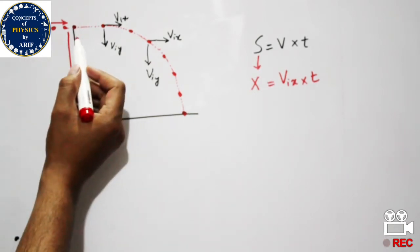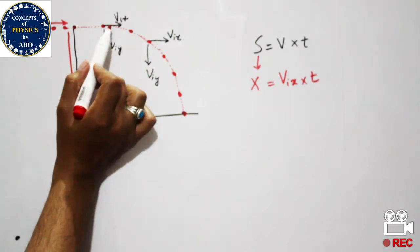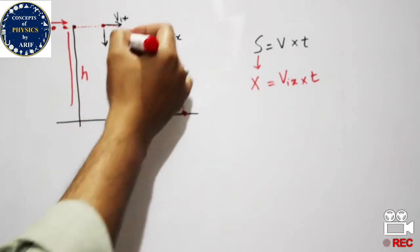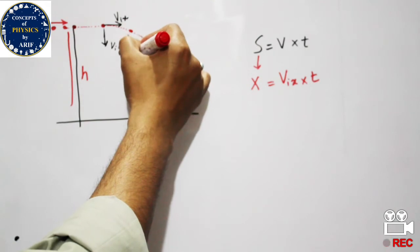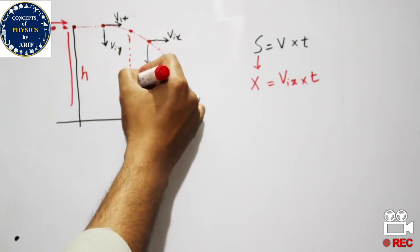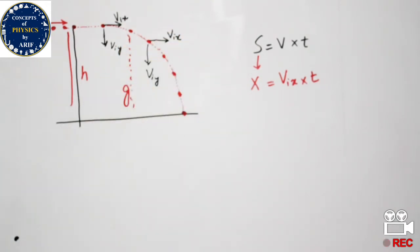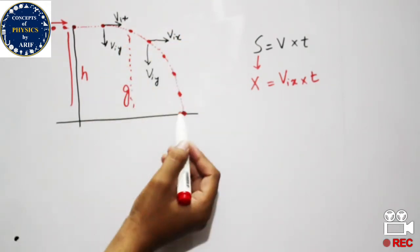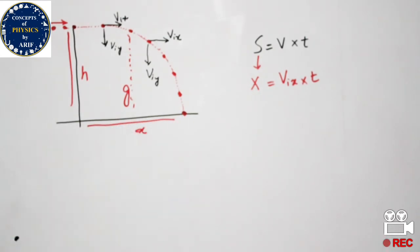By the passage of time the ball will go down due to acceleration. In this case acceleration is due to gravity, and when it hits the ground we need to find out the horizontal distance it has covered.